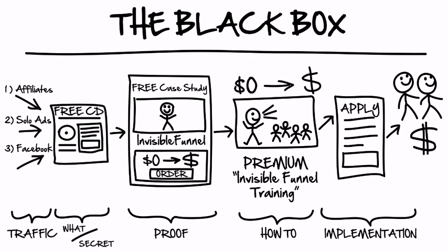So I want to walk you guys really quickly through this. The way the black box works — this is what the funnel looks like. The funnel starts with some kind of free offer, some kind of free plus shipping something. The free plus shipping is key because you need to qualify and find out who of all this traffic — affiliates, solo ads, Facebook — is actually a buyer, someone who's willing to pull their credit card out in exchange for more information.